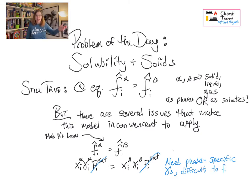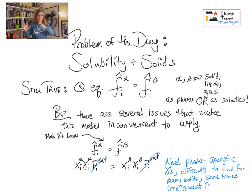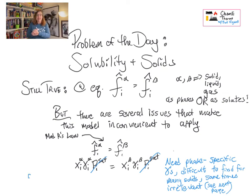Sometimes even when activity models are applicable, the parameters are not easy to find. So quite often this kind of modeling is the domain of people working with theory or doing fundamental research, while people working in chemical plants tend to use shortcut methods that address the immediate question: how much of this stuff is going to dissolve?